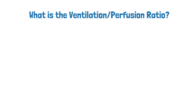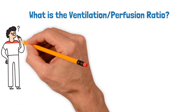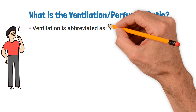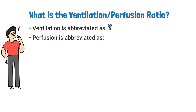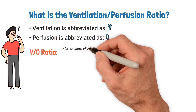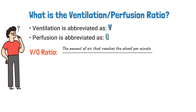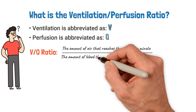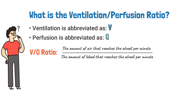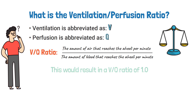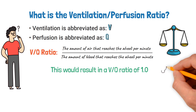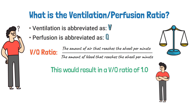Ventilation is abbreviated as V and perfusion is abbreviated as Q. The VQ ratio refers to the amount of air that reaches the alveoli per minute compared to the amount of blood that reaches the alveoli per minute. Ideally, the amount of oxygen and blood reaching the alveoli would be a perfect match, resulting in a VQ ratio of one. However, this isn't always the case, especially for patients with cardiopulmonary conditions.